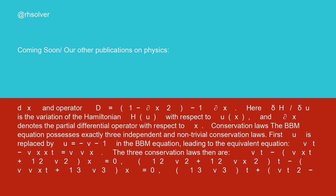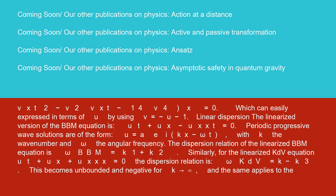The three conservation laws then are: vt minus vxt plus one-half v squared sub x equals 0; one-half v squared plus one-half vx squared sub t minus v vxt plus one-third v cubed sub x equals 0; one-third v cubed sub t plus vt squared minus vxt squared minus vxt squared minus v squared vxt minus one-quarter v to the fourth sub x equals 0.